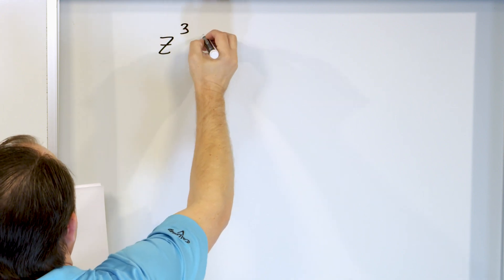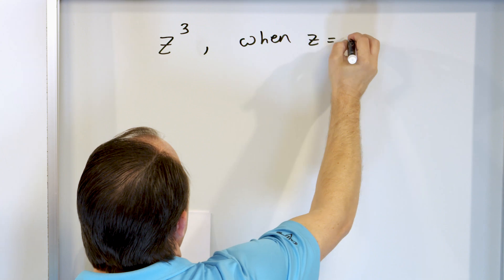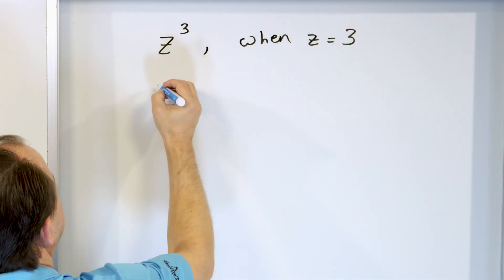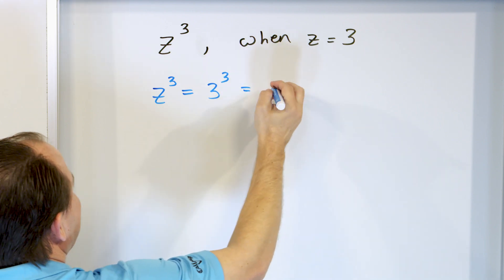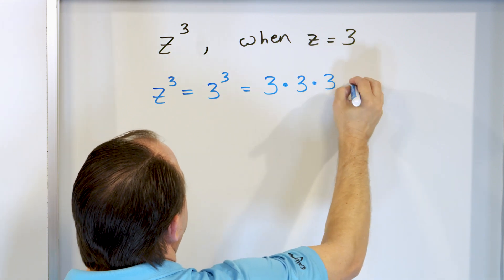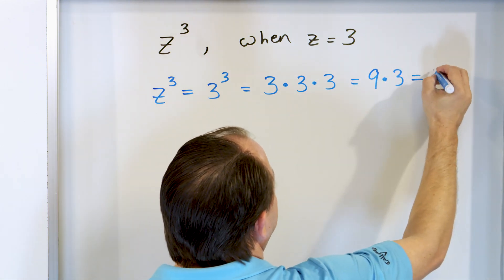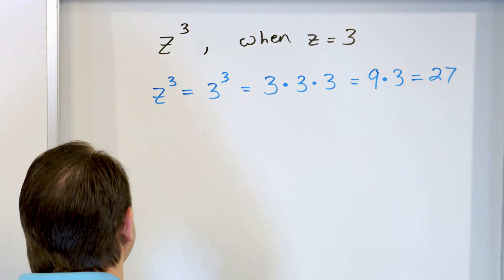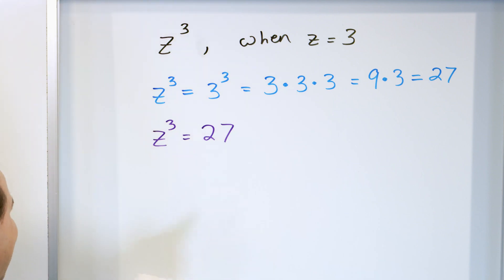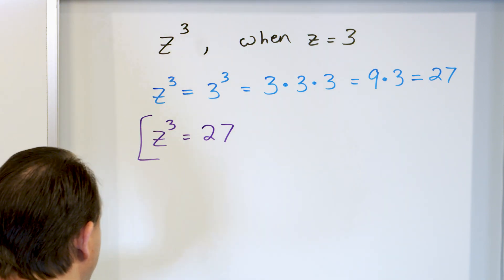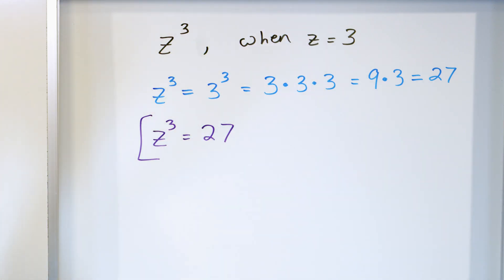Let's take a look at Z to the power of 3 when Z is equal to 3. We substitute it in: Z to the power of 3 is equal to 3 to the power of 3. When I calculate this, that'll be 3 times 3 times 3. The first two — 3 times 3 — is 9, and then still times 3, so 9 times 3 is 27. So Z to the power of 3 is equal to 27, only when Z is equal to 3. In future lessons, we won't know what the variable equals — we'll have to figure it out. But here I'm telling you what it is, so you put it in there and calculate.